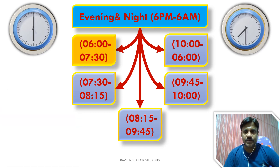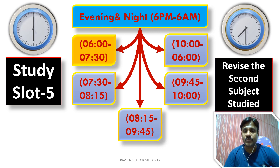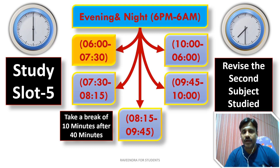The first evening slot, 6 to 7:30 p.m. — one and a half hours — is Study Slot 5. Here you revise the second subject you studied in the morning. Don't take a new subject; just revise. By this point you have studied three different subjects and revised one in the afternoon. Don't forget to take a 10-minute break after every 40 minutes of study.